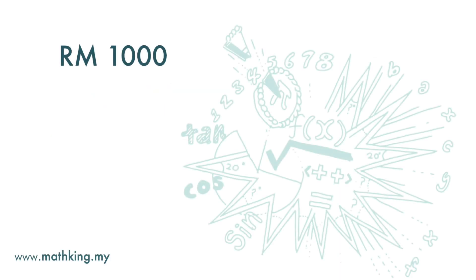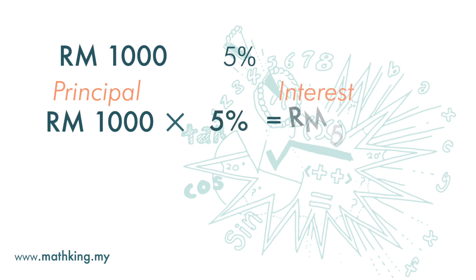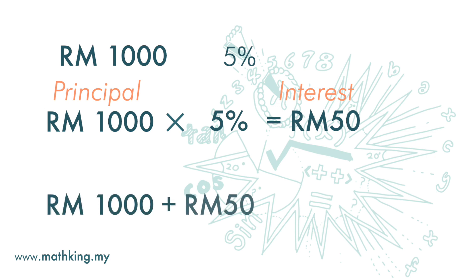If you save RM1,000 in a bank and the bank pays an interest of 5%, how much interest will you get after one year? In simple interest, the interest you get is 1,000, which is the principal amount, times 5%, and we get the interest amount of RM50. Together with the principal amount, you will have RM1,050 by the end of the year.